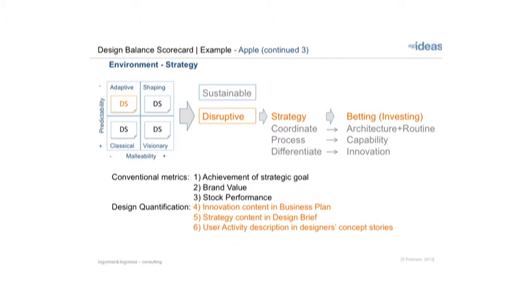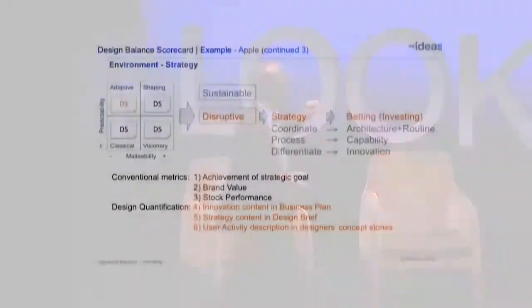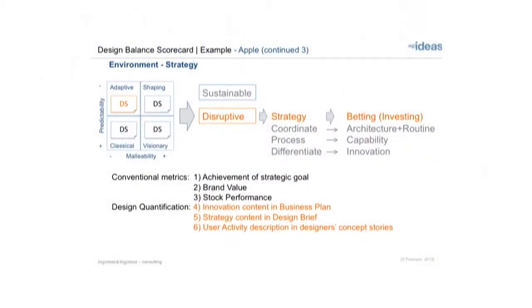Looking briefly at the metrics: conventional metrics for breakthrough innovation are achieving alignment with your strategic goals, increasing your brand value, and increasing stock performance. In design quantification, you look at innovative content, innovative plan, strategy content, and design brief, along with user activities — what kind of activities people are focusing on in the design brief. These are the disruptive strategy and betting factors that inform how you measure your design scorecards.